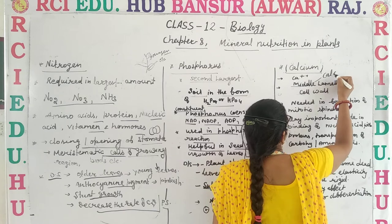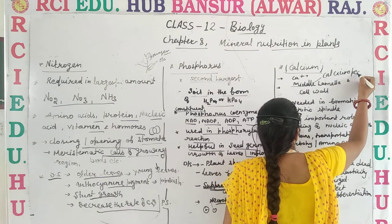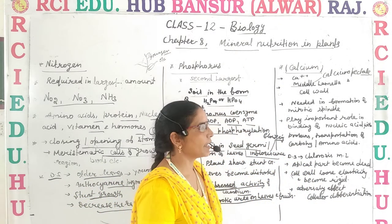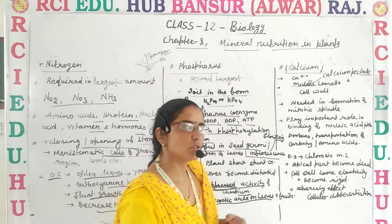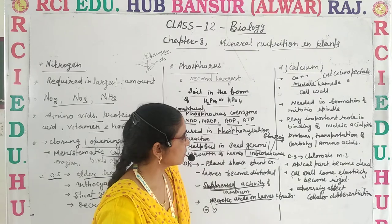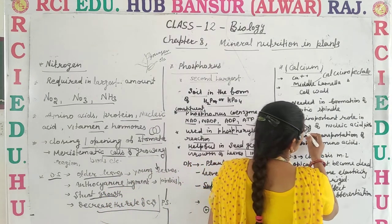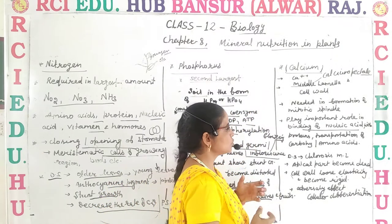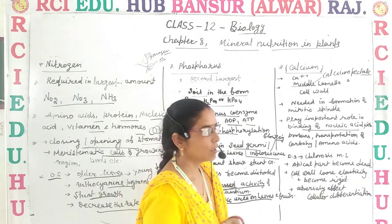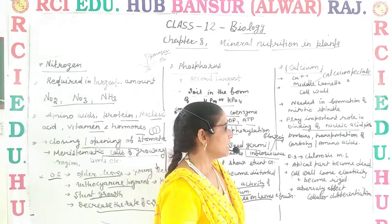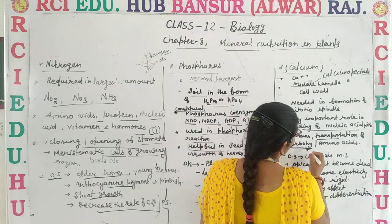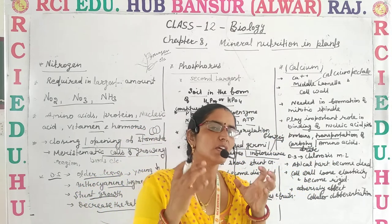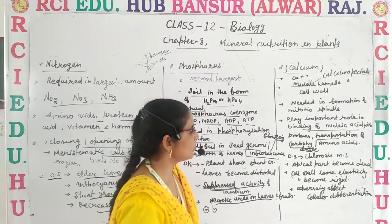Calcium is the main constituent of the middle lamella and cell wall. It is required by the middle lamella in the form of calcium pectate. It is absorbed by the plant in the form of calcium ions. It is also needed in the formation of the mitotic spindle during cell division. It also plays a vital role in the binding of nucleic acids with proteins, and in the transportation of carbohydrates and amino acids.